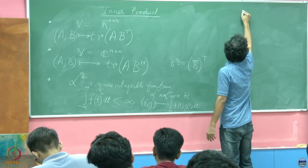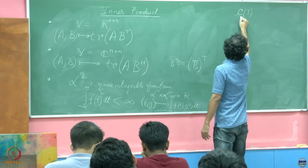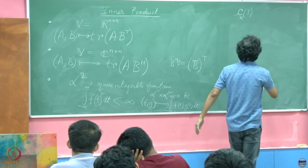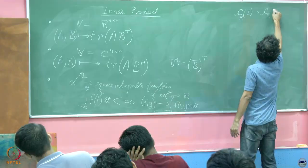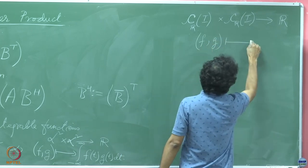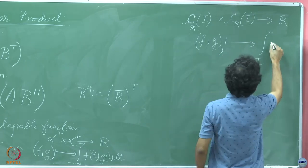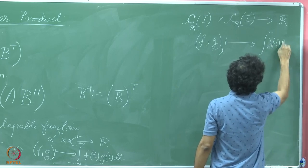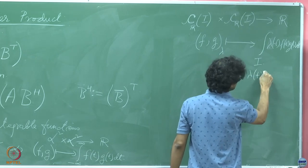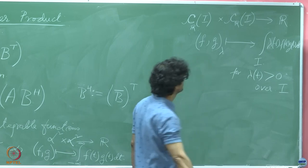Let us take the case of continuous functions over some interval in R. So real continuous functions over some interval I, where I is some interval over the real line. That is also a vector space, and if you take F and G and map them — with some generalization — you take the integral over the interval I of λ(t) F(t) G(t) dt, for λ(t) which is positive over I. That is also an inner product.